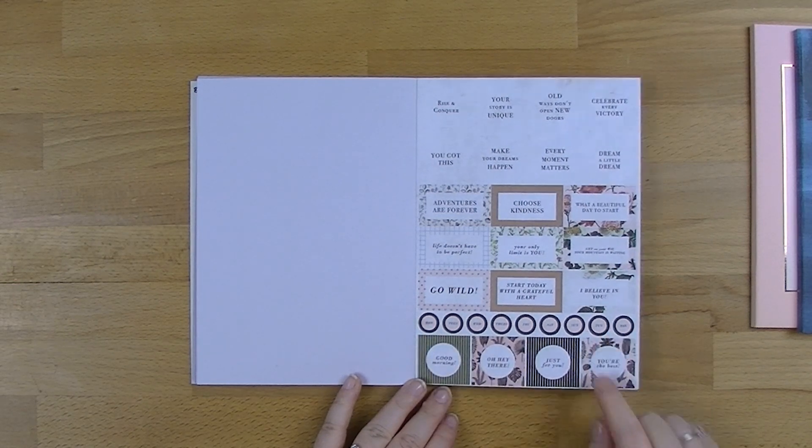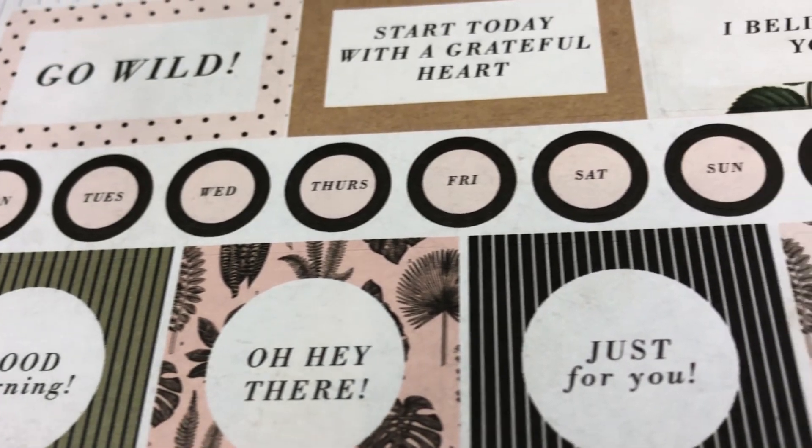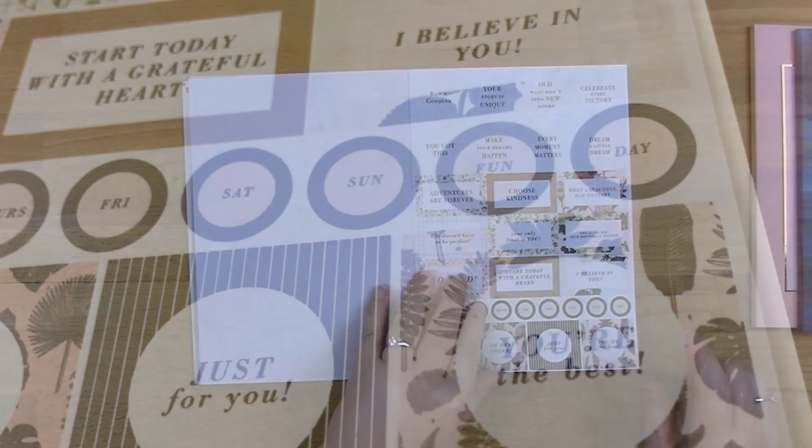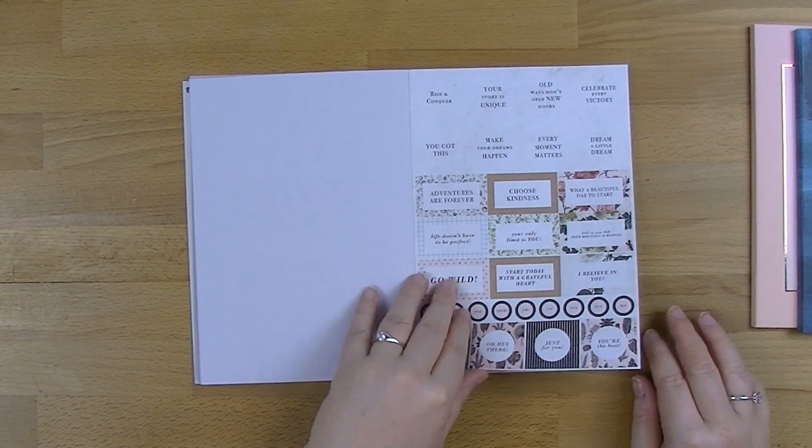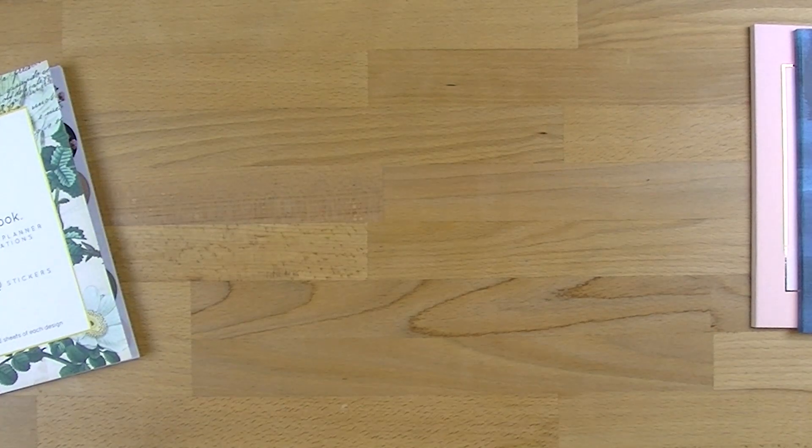Oh, there we go. So they do have the days. They've just got them in circles. That's awesome. I like those. So you've got Monday, Tuesday, Wednesday, Thursday, Friday, Saturday, Sunday, and you've got Fun Day just to add new ones in there. So that is the botanical one. Honestly, that's the one I think I'm going to like the least, but I'm not sure.